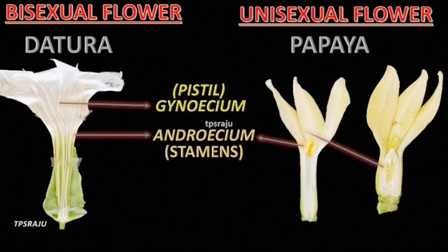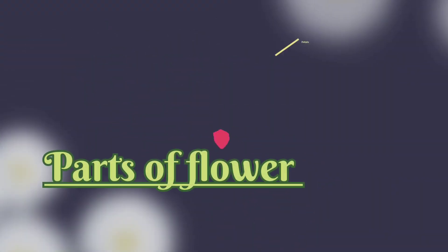An example of a bisexual flower is Datura, whereas in unisexual flowers, papaya is one example. Now let's talk about the parts of flowers.